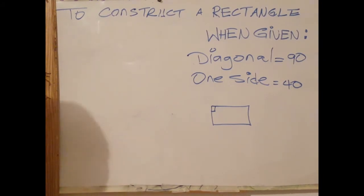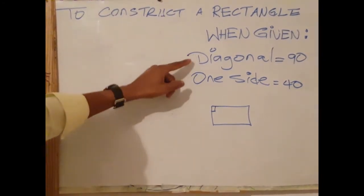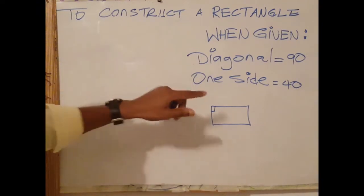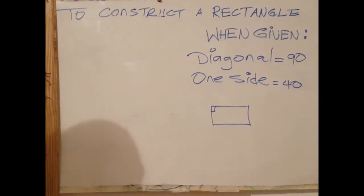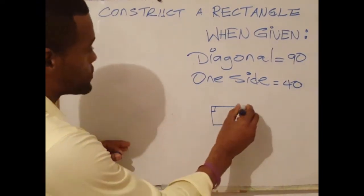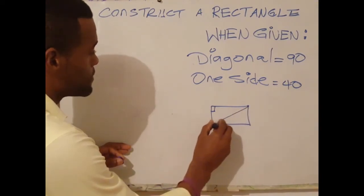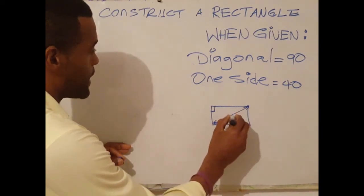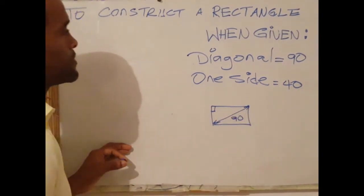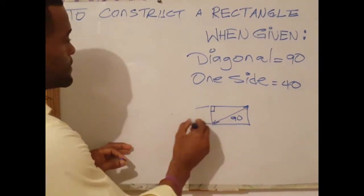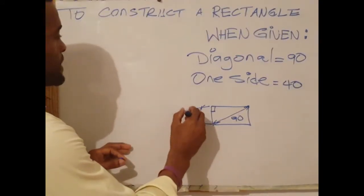How do we go about constructing a rectangle when given a diagonal and one side? First step, in this case the diagonal is given as 90 and a side is given as 40.